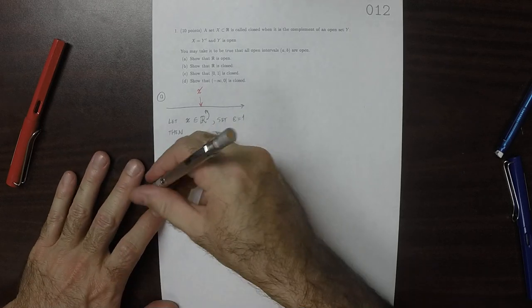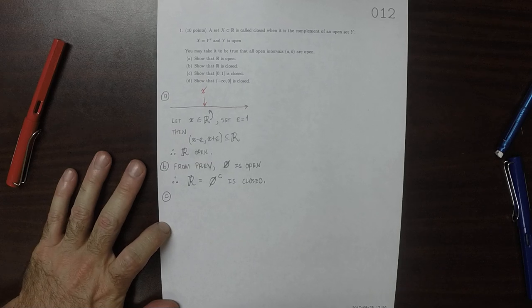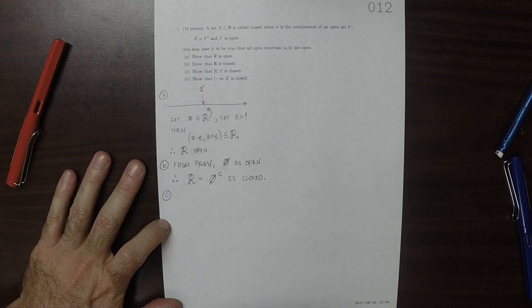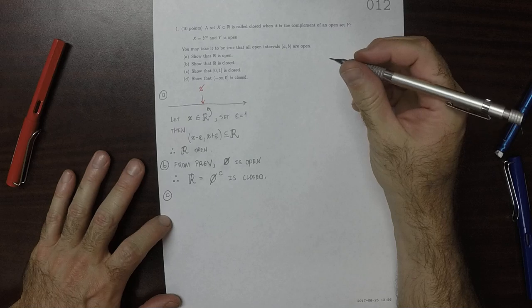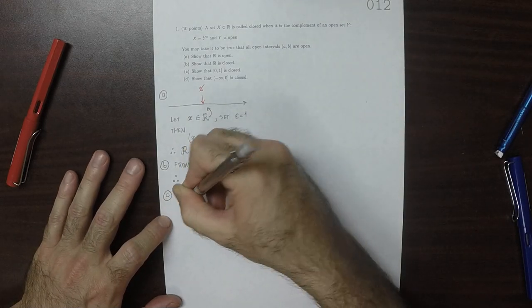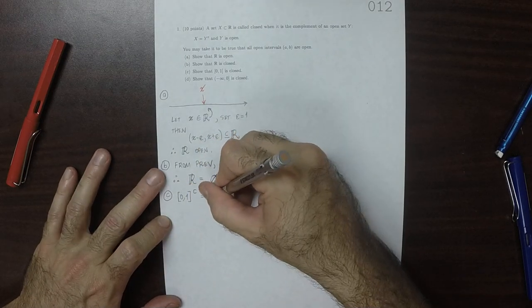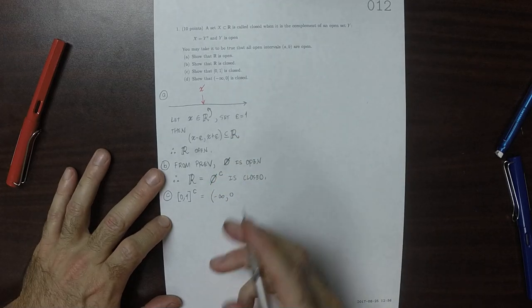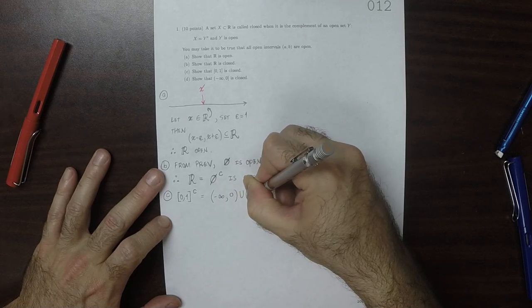Okay, for part C. We want to show that that is open. So, notice that the complement of that set is the set negative infinity to 0, union 1 to infinity.